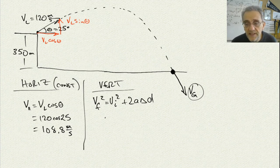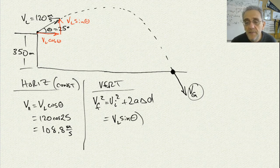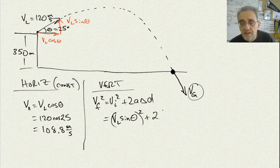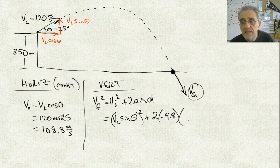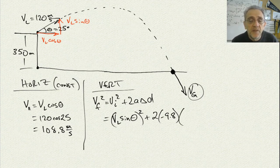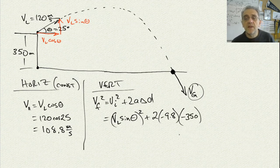Now we know what the initial velocity is — it's VL sine theta, so we'll put that in. VL sine theta squared, plus 2 times negative 9.8, is our acceleration, times delta D. Now be careful here, because it's not 350. If we start up here and end at the bottom, that means we're losing altitude — that means it's negative 350. So negative 350 is delta D, and our acceleration is also negative 9.8.